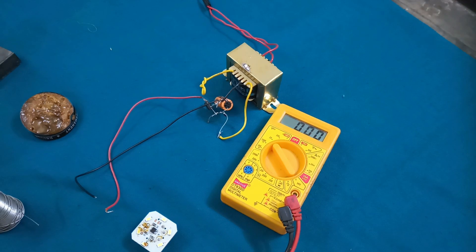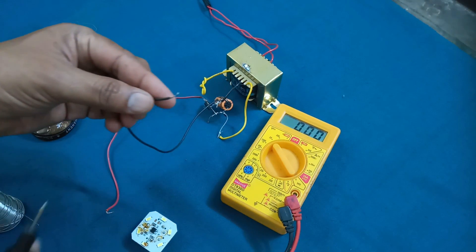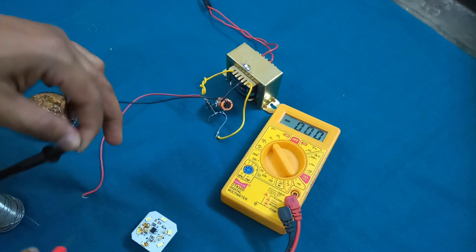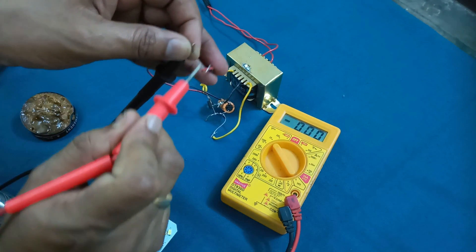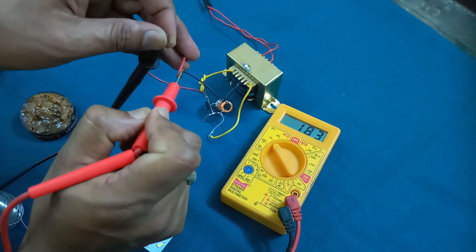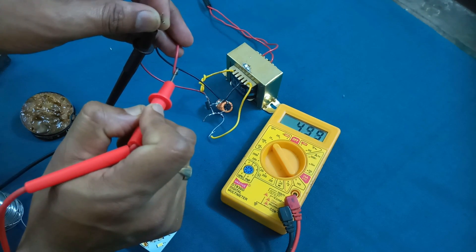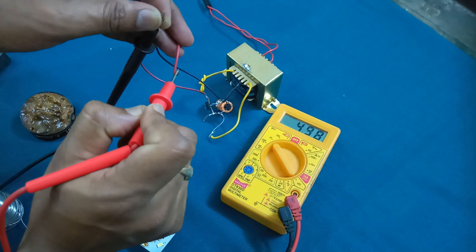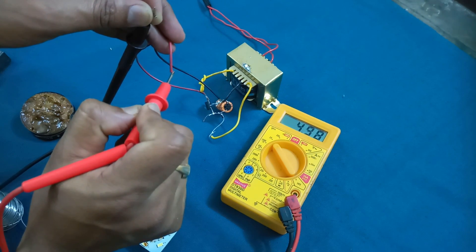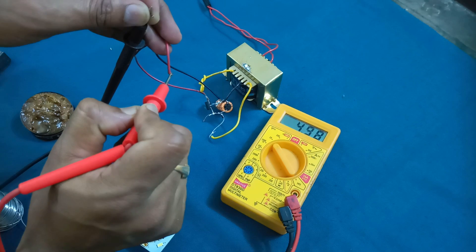Now I will check this multimeter selector 20 volts DC range. This is the negative wire, the black probe, and positive wire is the red probe. It is coming around 4.998, accurate five volts DC output is coming. It is working, regulator power supply. You put on this regulator, it's heat sink also.